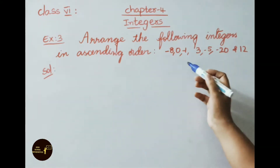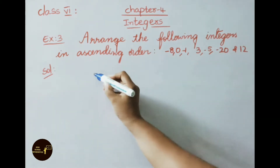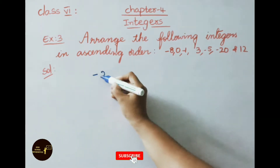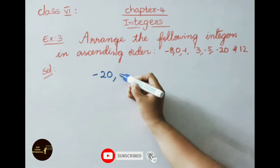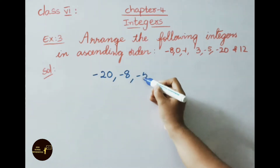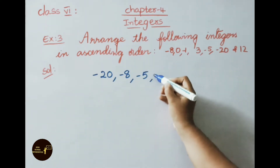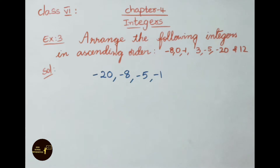First, we have to take the negative integers: minus 20, minus 8, minus 5, minus 1.